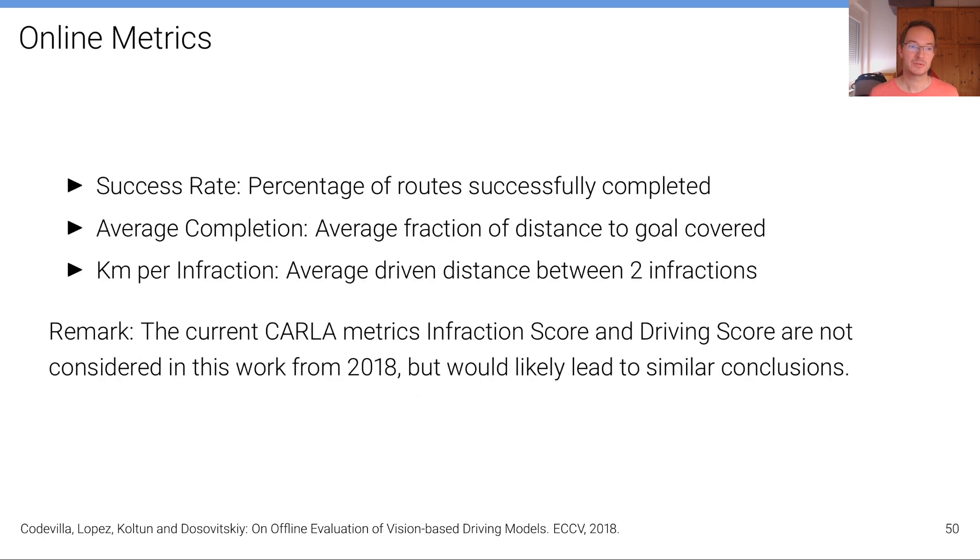The online metrics that are considered are the success rate which is the percentage of routes successfully completed, the average completion which is the average fraction of distance to the goal covered until for example an infraction occurs, and the kilometers per infraction which is the average driven distance between two infractions.